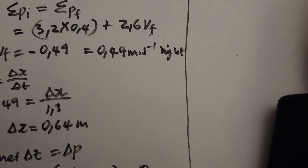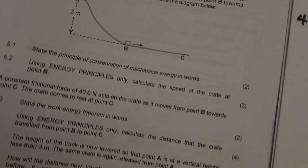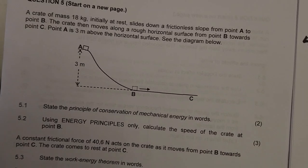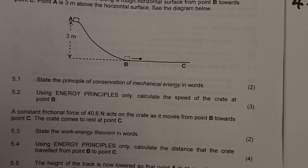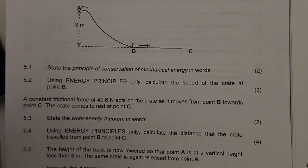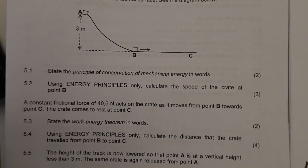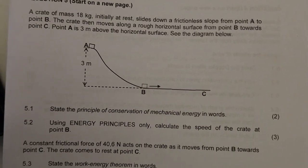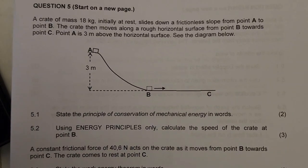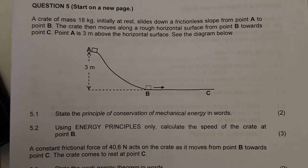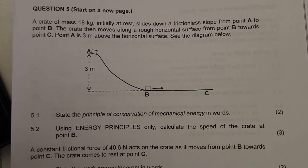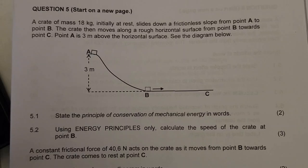Let's move to question five, which is about work, energy, and power. A crate of mass 18 kg, initially at rest, slides down a frictionless slope from point A to B. When there is no friction, we apply conservation of mechanical energy. The crate then moves along a rough horizontal surface from point B towards C — that's where grade 12 work-energy theorem or work done by non-conservative forces applies. Point A is 3 meters above the horizontal surface.